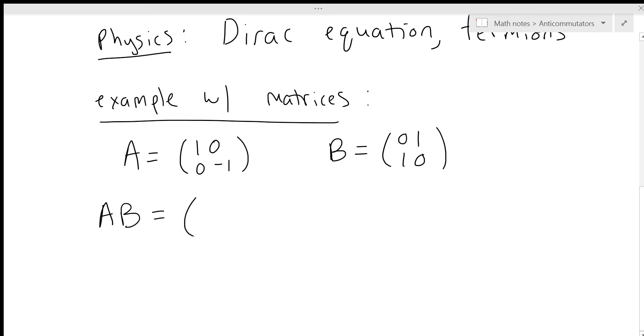You can check it at home, and you'll find that A times B equals (0, 1; -1, 0), but B times A equals (0, -1; 1, 0).